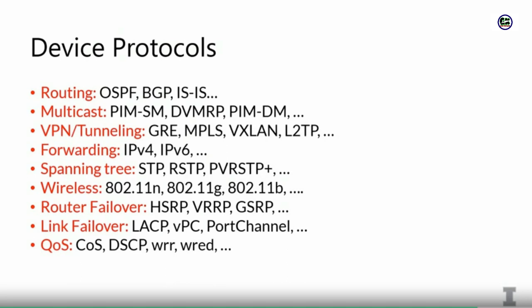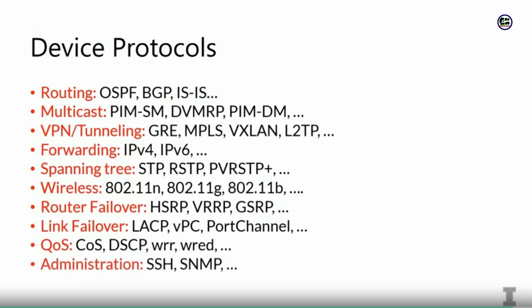There are also many protocols associated with quality of service. If you have a device sending important data that's getting congested and dropped and you want to give it better quality of service, you can consider protocols like CoS and DSCP. These protocols can drop packets in different orders or provide better quality of service to certain packets. Finally, there are protocols for administration of routers — if you want to log in and administer a router, there's SSH and Telnet. These are all widely used protocols used in the control plane of devices.